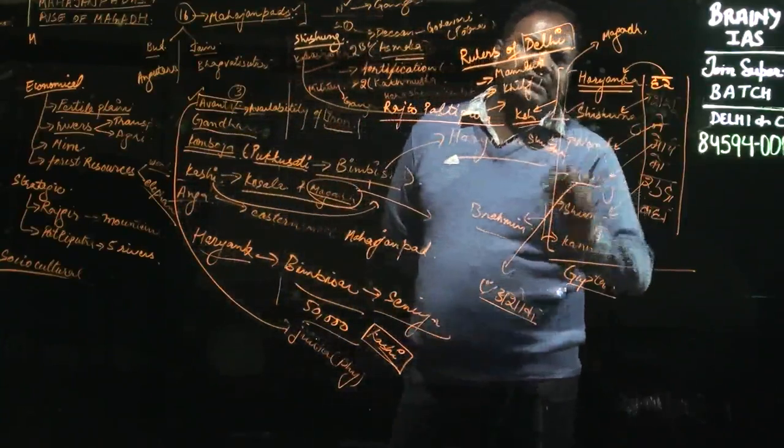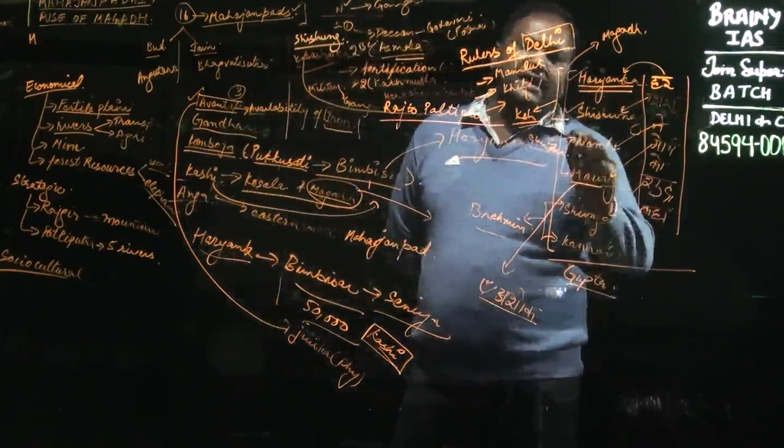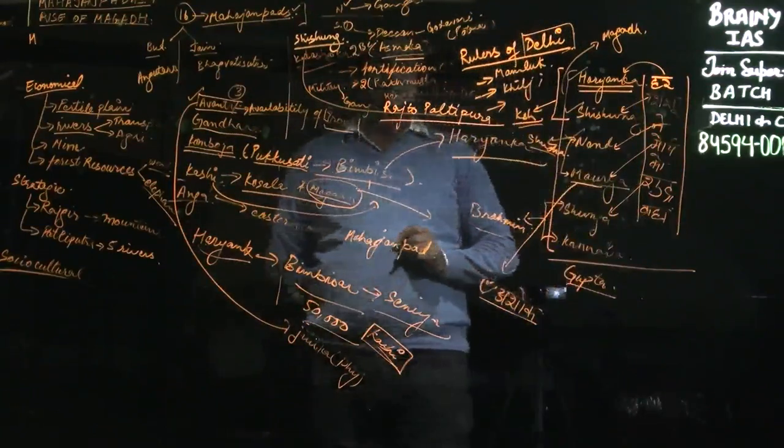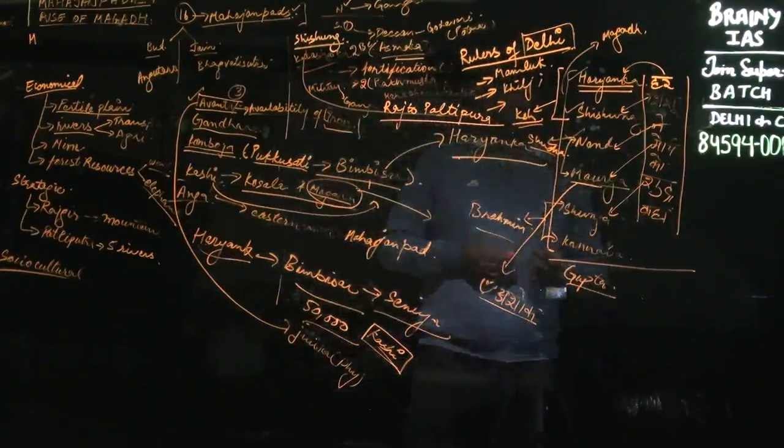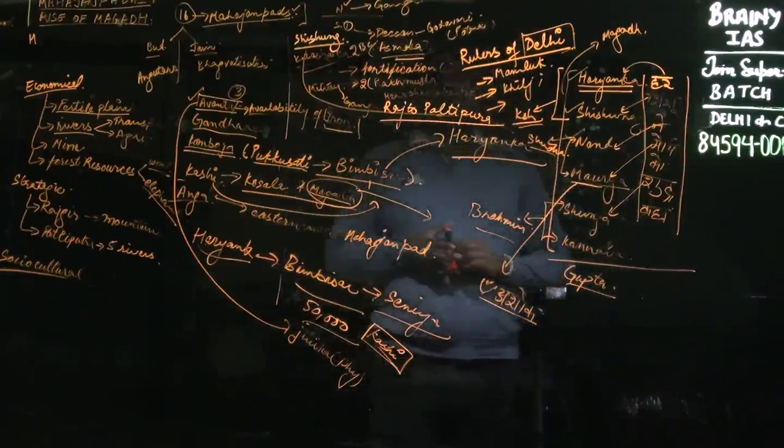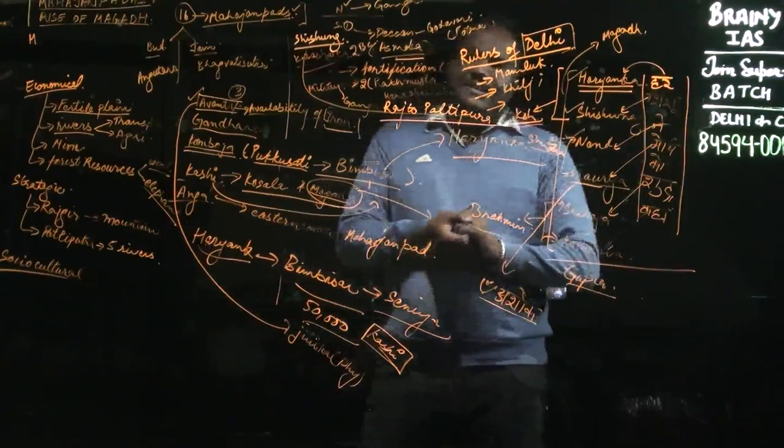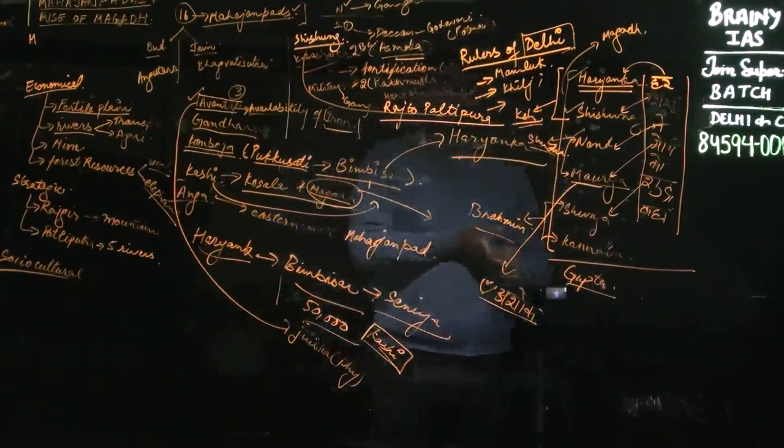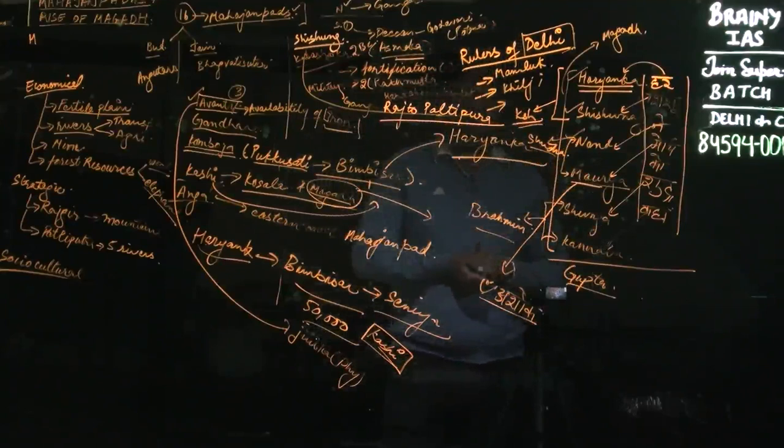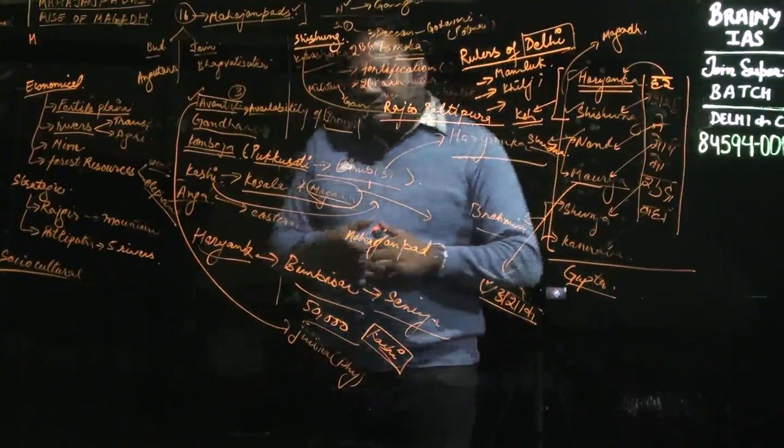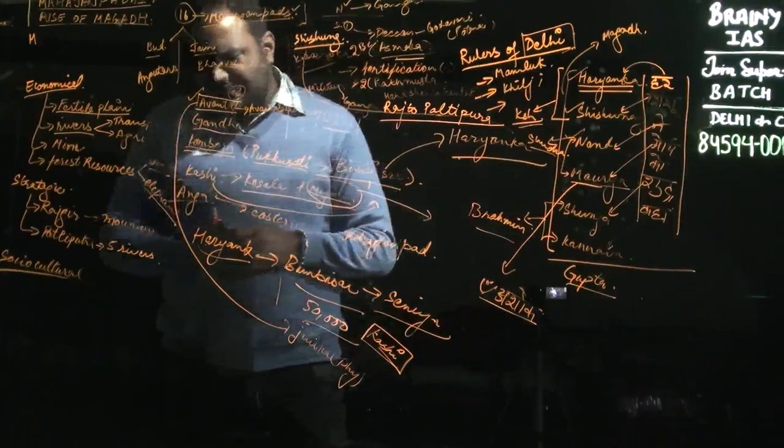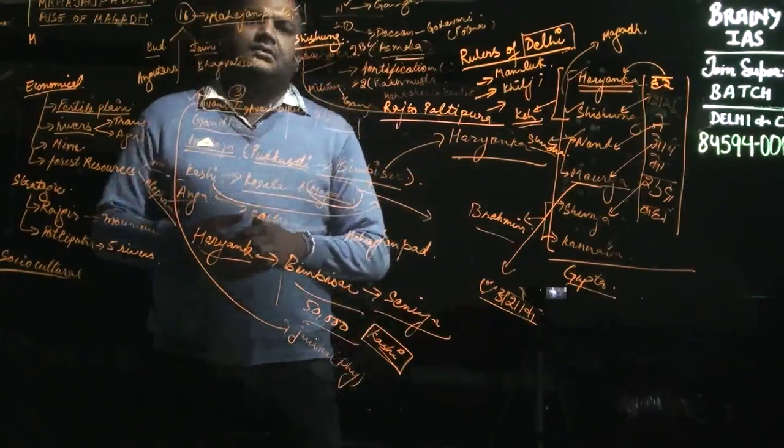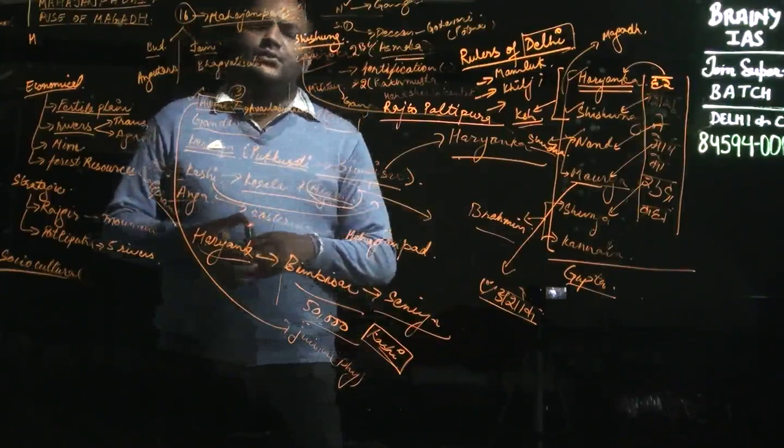The Shishunaga dynasty had only three important figures. We have covered the Haryanka dynasty. Now coming to the Nanda dynasty, we will be covering only three individuals. The first individual is Mahapadmananda and the second one is Dhanananda. Mahapadmananda is important because he went south to establish his rule over there.